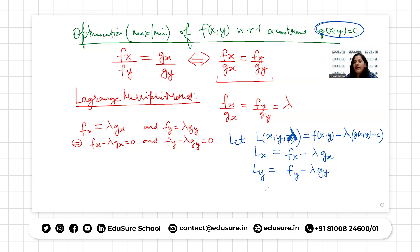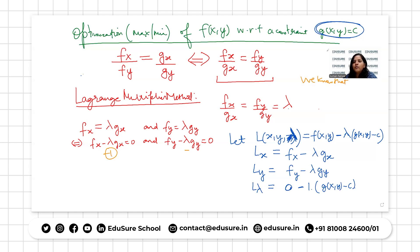When we partially differentiate L with respect to x, we get fx minus lambda times gx, because c is a constant so its derivative is zero. Similarly, Ly gives fy minus lambda times gy. And when we differentiate with respect to lambda, since f depends only on x and y, we get zero minus one times (g(x,y) minus c). We can see that conditions 1, 2, and 3 holding means Lx equals zero, Ly equals zero, and L-lambda equals zero.